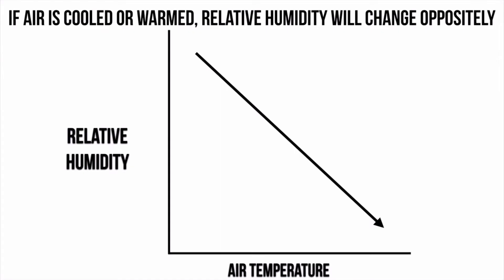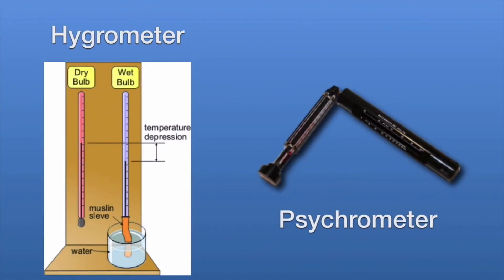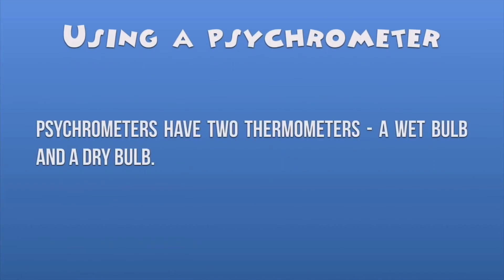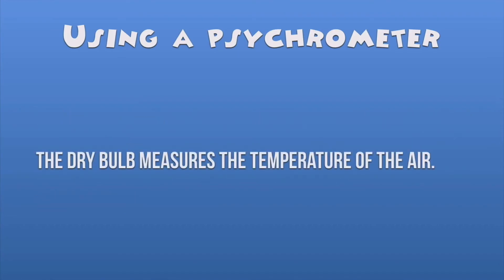To measure humidity we use two devices. One is called a hygrometer, which we won't use. The other is called a psychrometer. A psychrometer uses two different thermometers: one called a wet bulb and the other a dry bulb. The wet bulb is moistened with water and measures the rate of evaporation in degrees — the more water that evaporates from the wet bulb, the lower the temperature will be. The dry bulb simply samples the air.